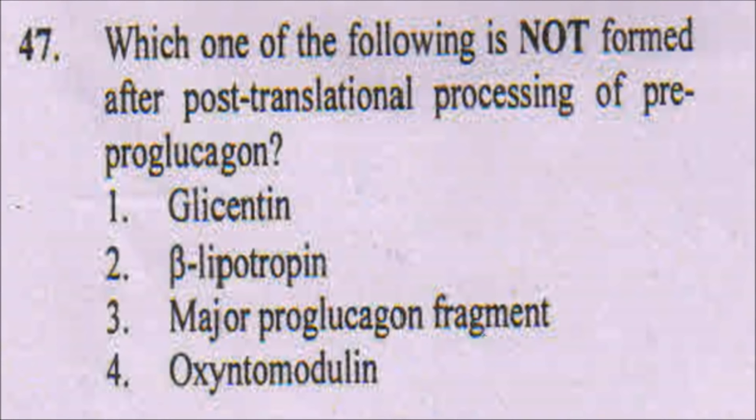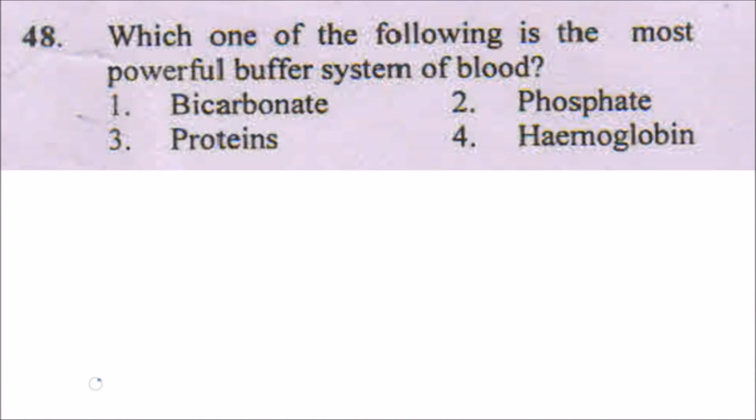The next question is: which one of the following is not formed after post-translational processing of pre-pro-glucagon? The answer is beta-lipotropin. The next question is: which one of the following is the most powerful buffer system of blood? It is definitely the bicarbonate buffer system.